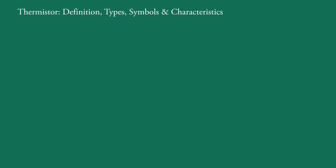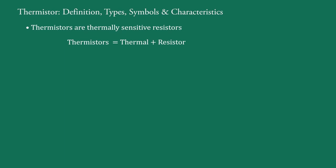In today's video we will discuss the definition, types, symbols and characteristics of thermistors. Thermistors are thermally sensitive resistors. The word thermistor is a combination of thermal and resistor. The resistance of a thermistor strongly depends on temperature, meaning the thermistor is a heat-sensitive resistor.